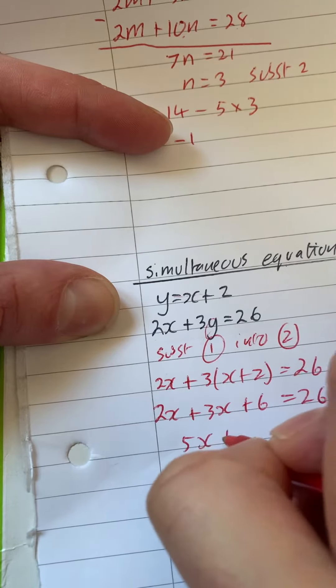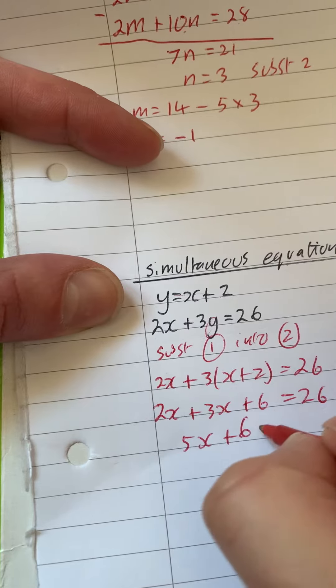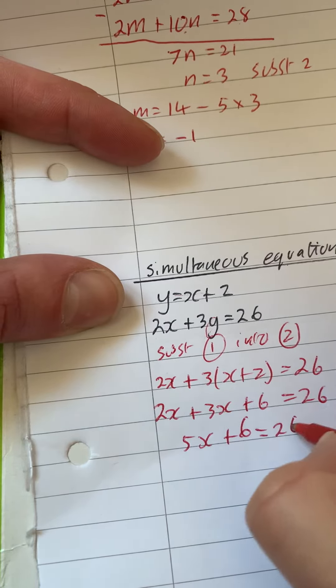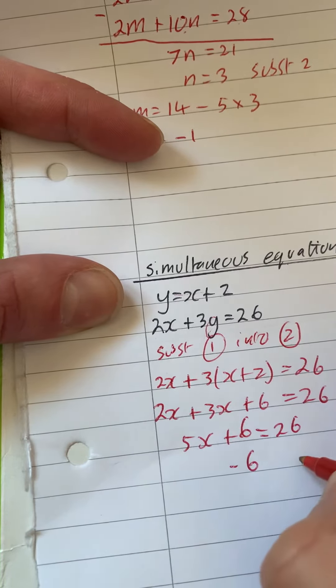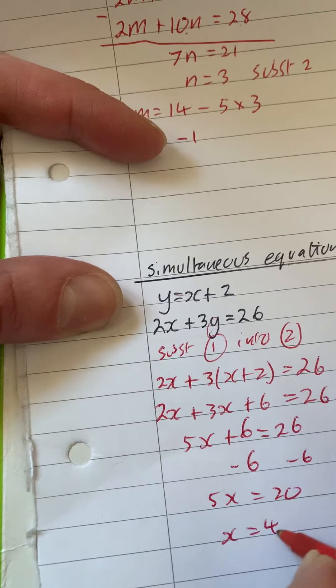So 5x plus 6 equals 26. Take away the 6 from both sides. 5x is equal to 20. So therefore, x is equal to 4.